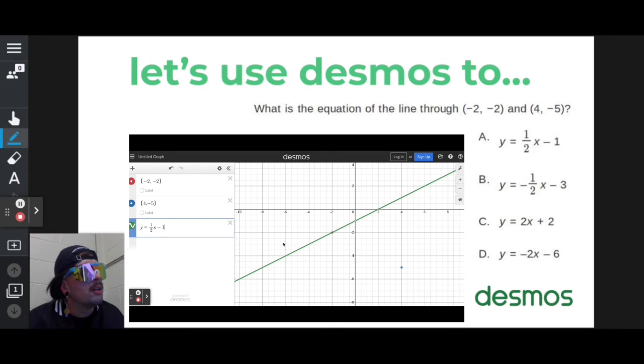And as you can see from the first option, it goes through one of the points, but it does not go through both of the points. So A is not it.